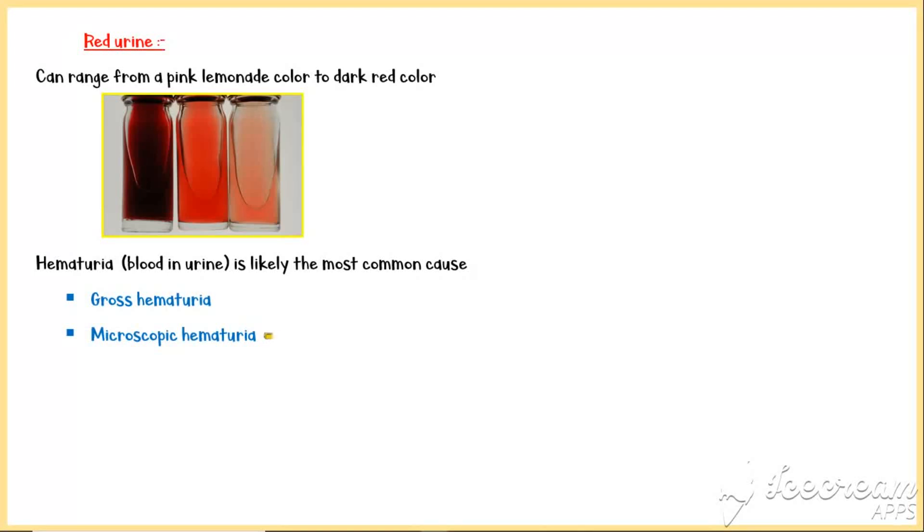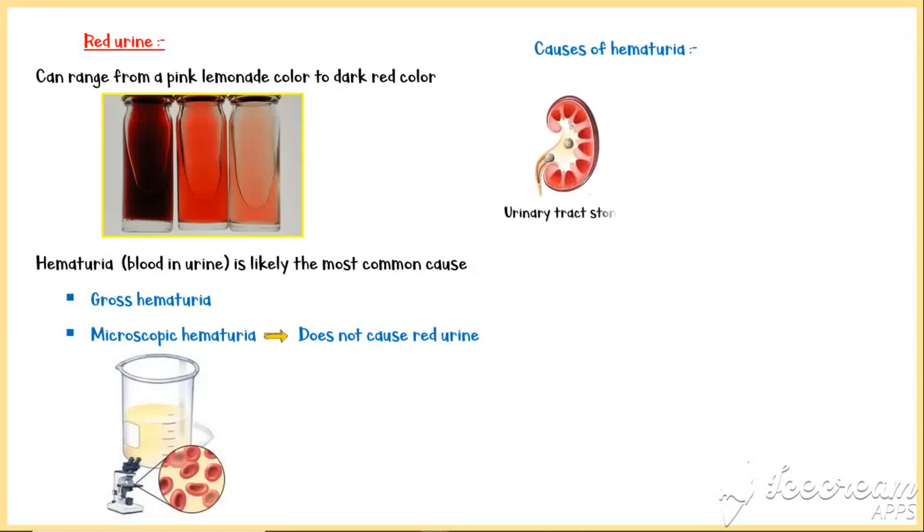However, microscopic hematuria does not cause red urine. Here, only a microscope can identify the red blood cells in urine. Otherwise urine looks normal. So, only the gross component of hematuria causes red urine.